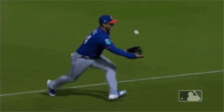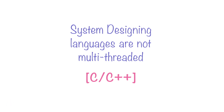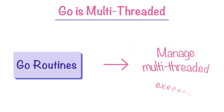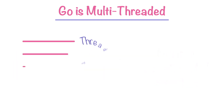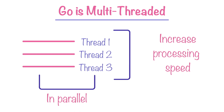Go language is also multithreaded. Most modern languages are not multithreaded and had those capabilities added later, but Go language was created with this capability built in. Not only that, it has GoRoutines, which come with special power to manage multithreading so you don't have to do much. Being multithreaded means it can run multiple threads in parallel to increase processing speed.